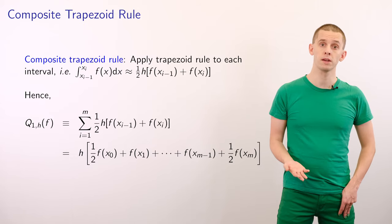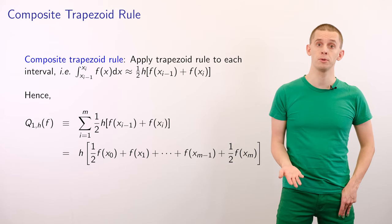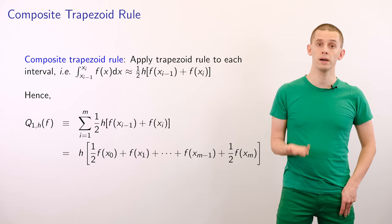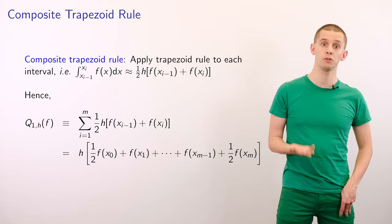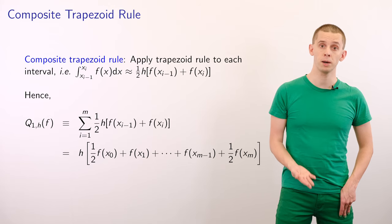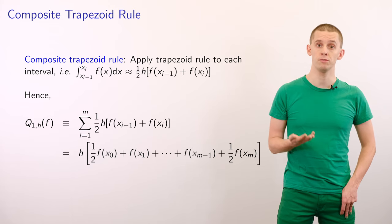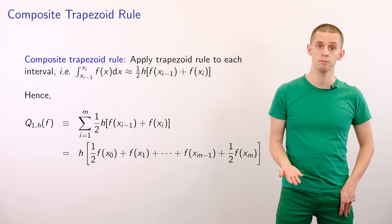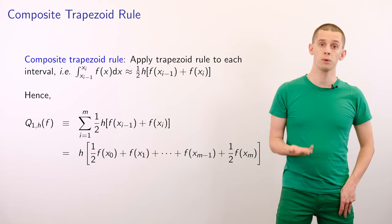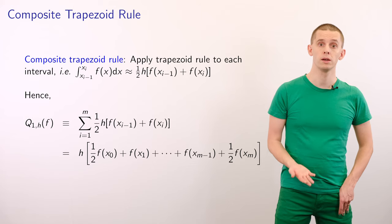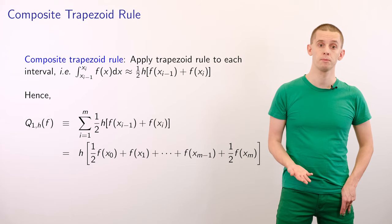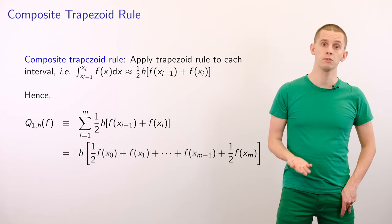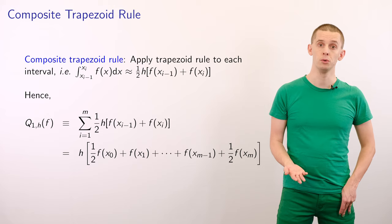Let's take a look specifically at the case of the composite trapezoid rule. We apply the trapezoid rule to each interval, approximating the integral from x_{i-1} to x_i of f(x) dx as h divided by 2 times f(x_{i-1}) plus f(x_i). We write our composite trapezoid rule as Q_{1,h} of f, equal to the sum from i equal 1 to m of h over 2 times f(x_{i-1}) plus f(x_i).